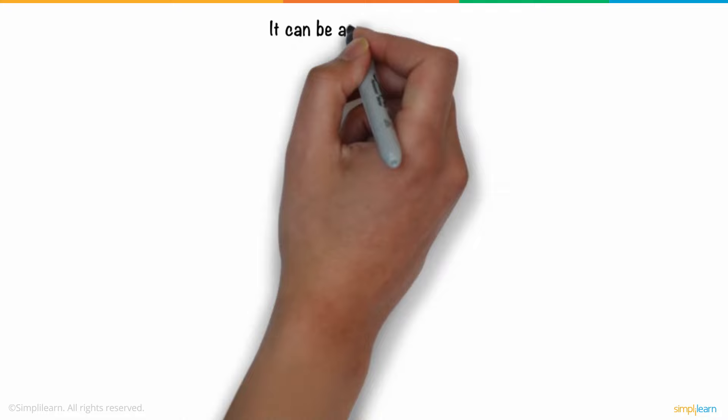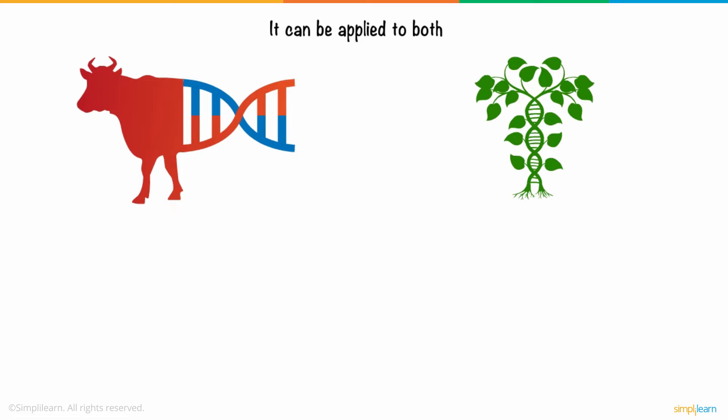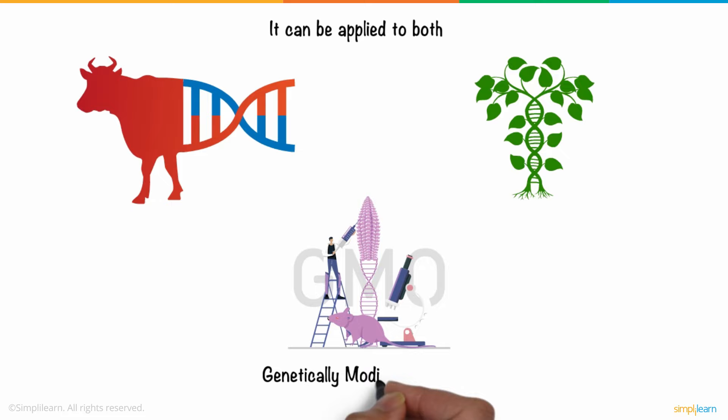It can be applied to both animals and plants, since both are living organisms with their own DNA structures. The resultant organism is often called a GMO, a genetically modified organism.